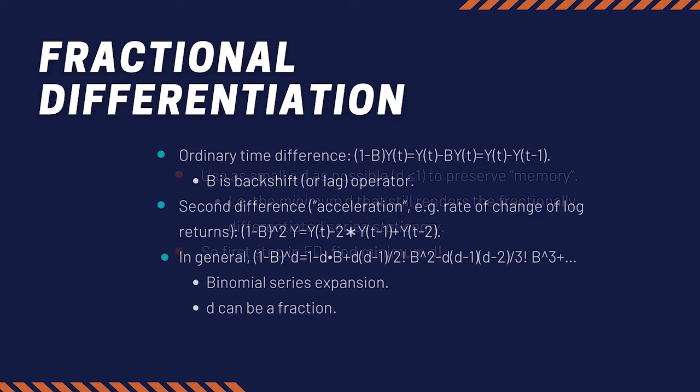The exact definition is given by this binomial time series. You can plug in d with 0.5, 0.6, 0.7, and apply that to your original price, log price. The result is the fractionally differentiated price series.